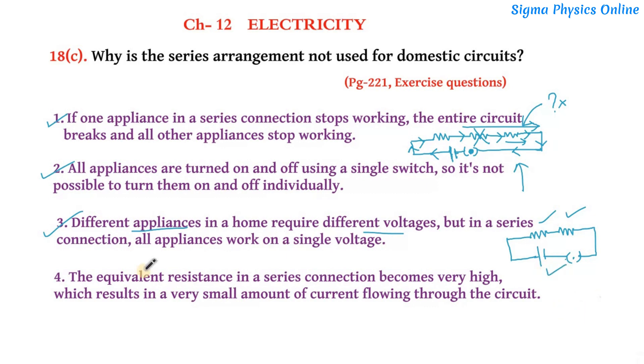The fourth one is: the equivalent resistance in a series connection becomes very high, which results in a very small amount of current flowing through the circuit. Now we know that in the case of a series circuit, the equivalent resistance is given by R1 plus R2 plus R3 and so on, that is the sum total of all the individual resistances. When all the individual resistances add up, the overall value increases.